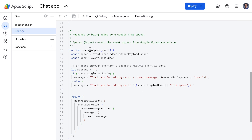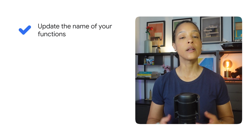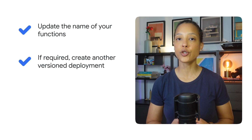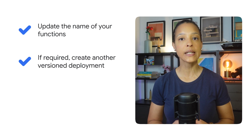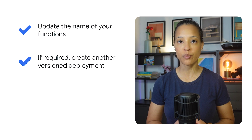If your Chat app responds to being added or removed from chat spaces, you can address this breaking change and avoid any potential errors by doing the following. In your Apps Script project, update the name of your functions to onAddToSpace and onRemoveFromSpace. If required, create another version deployment of your Apps Script project and save the new deployment ID in the Chat API configuration page in the Google Cloud console.